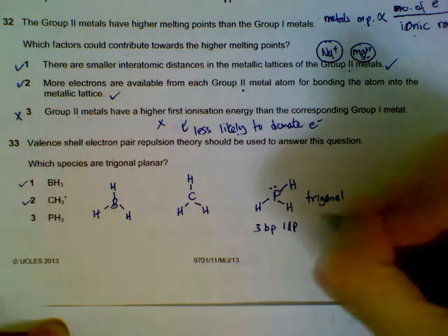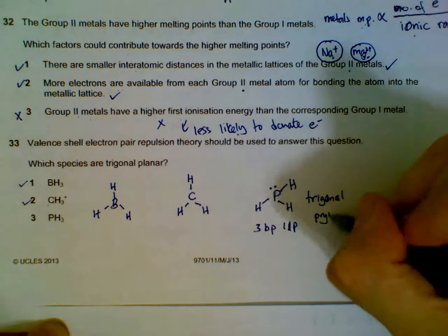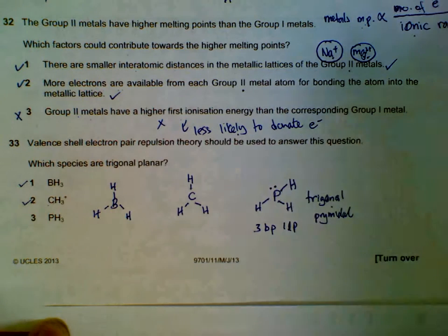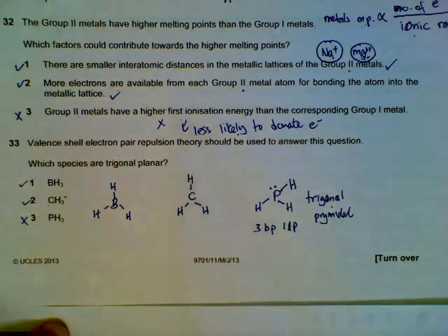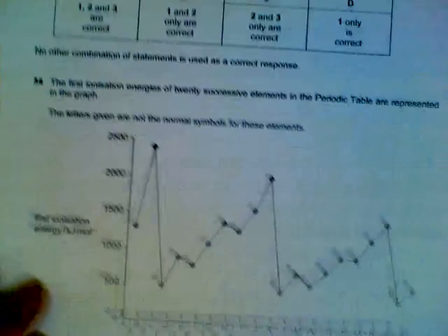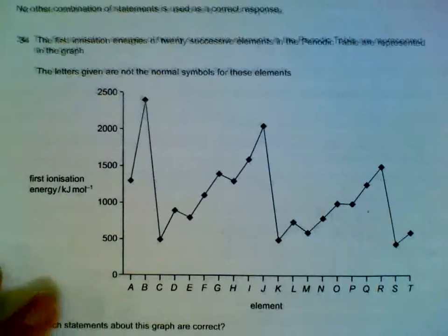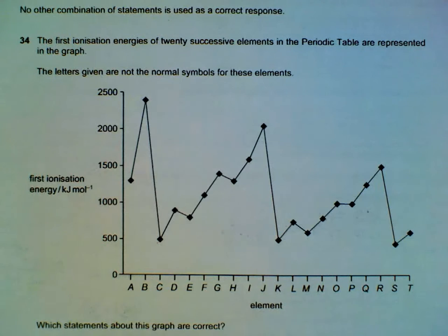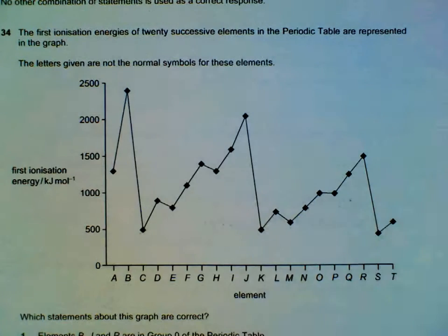This means PH3 is not trigonal planar; it's trigonal pyramidal. So only one and two are trigonal planar.